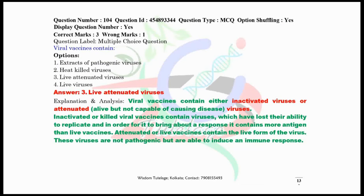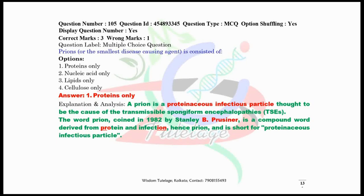Question number 104: Viral vaccines contain nothing but the live attenuated virus or the inactivated virus. Question number 105: Prions, the smallest disease-causing agents, consist of protein — that is, they are proteinaceous infectious particles.